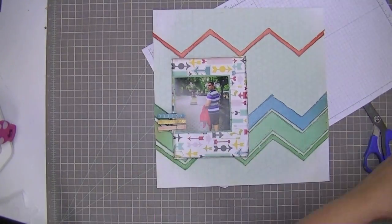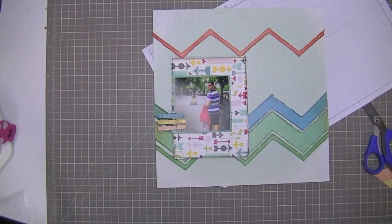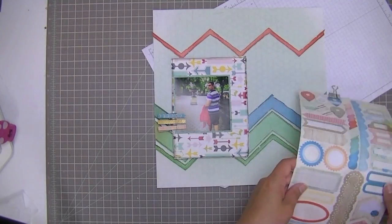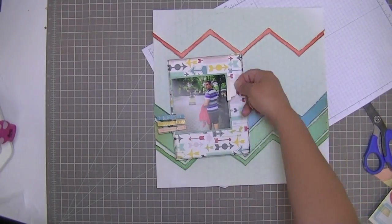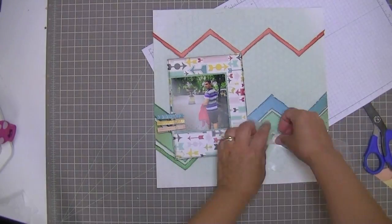Those are those three Amy Tangerine clothespins that came in the kit. I also have some of those crepe paper stickers that came in the kit trying to decide what I'm going to do with them.